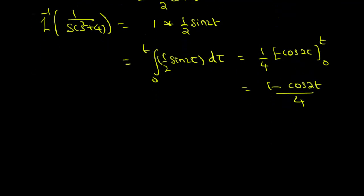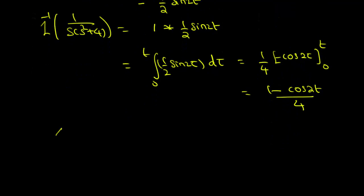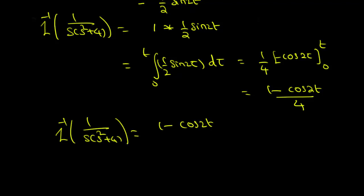Therefore, the Laplace inverse of 1 over s(s² + 4) is (1 - cos(2t)) / 4.